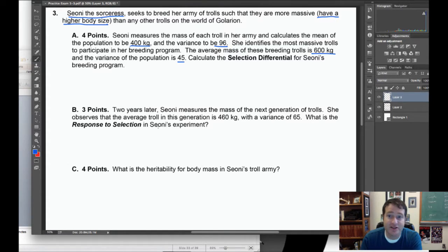The first thing I ask you to calculate is the selection differential. The selection differential is nothing more than the difference between the mean of the breeders and the mean of the whole population. So the selection differential, this will be the easiest four points you ever got in your life: 600 kilograms minus 400 kilograms equals 200 kilograms. Done, four points.